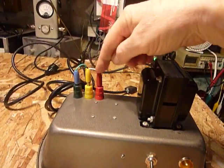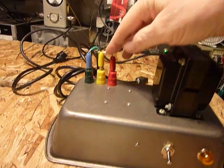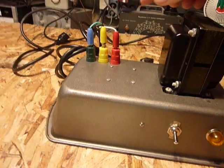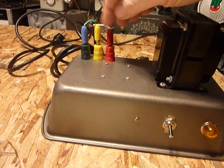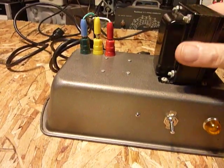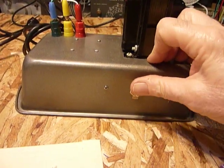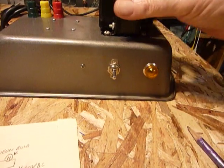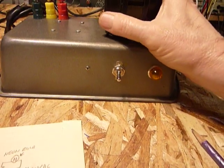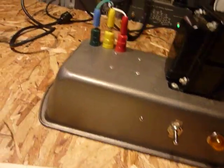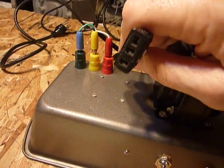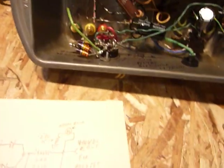The connectors for the paraset are these banana connectors here. I did not have a green one for the ground, so I used a blue one. The red is B plus, the yellow is the filament, and then I put an on-off toggle switch on there. This is a neon bulb to indicate the presence of B plus, and here is the cord with the socket to plug into the paraset, also purchased at a ham fest.